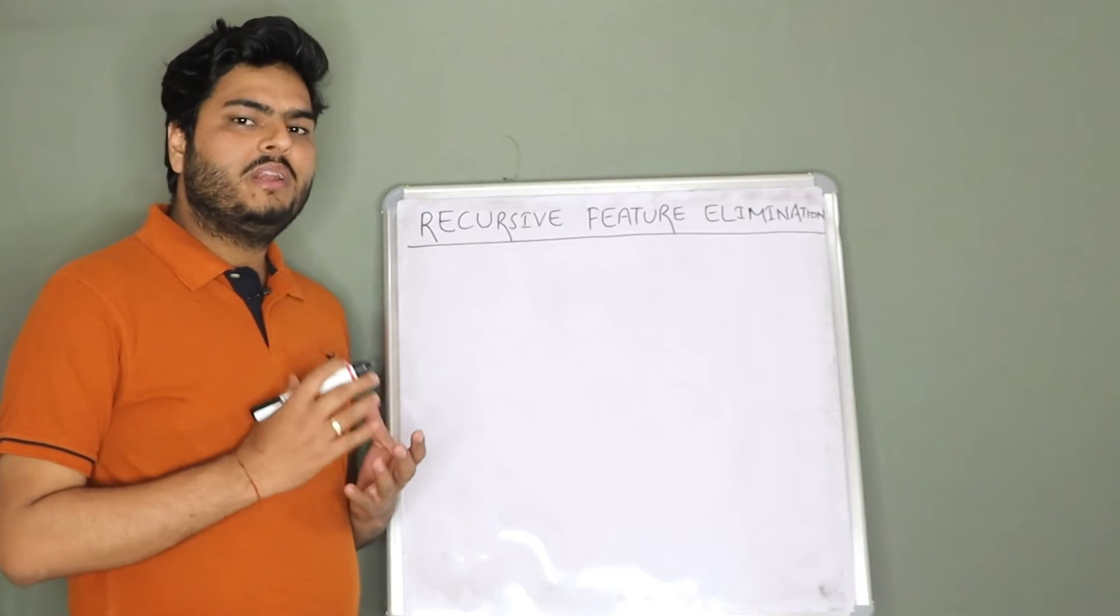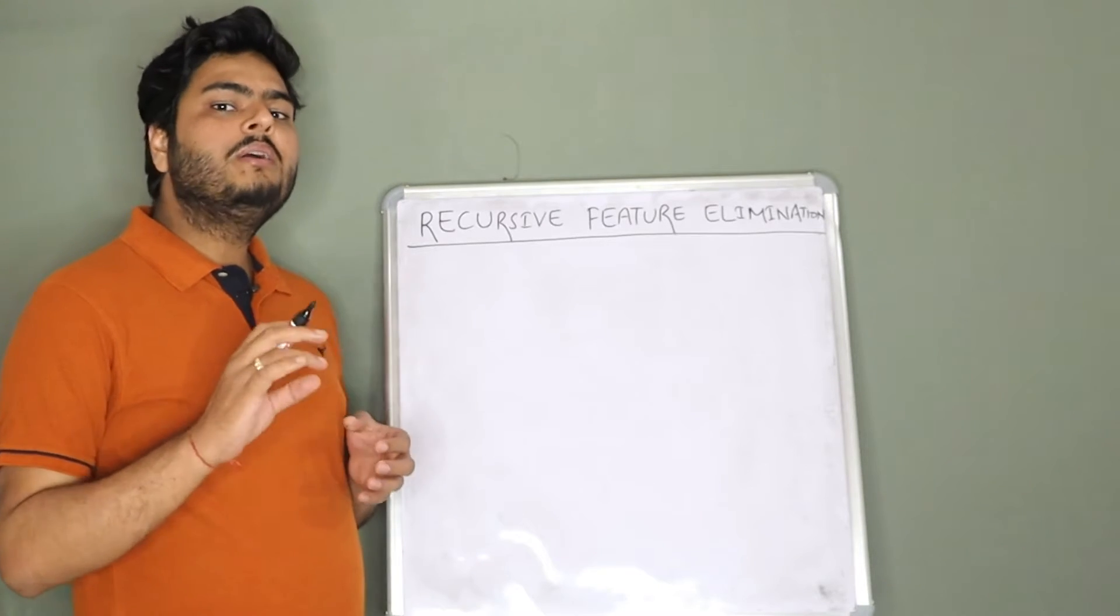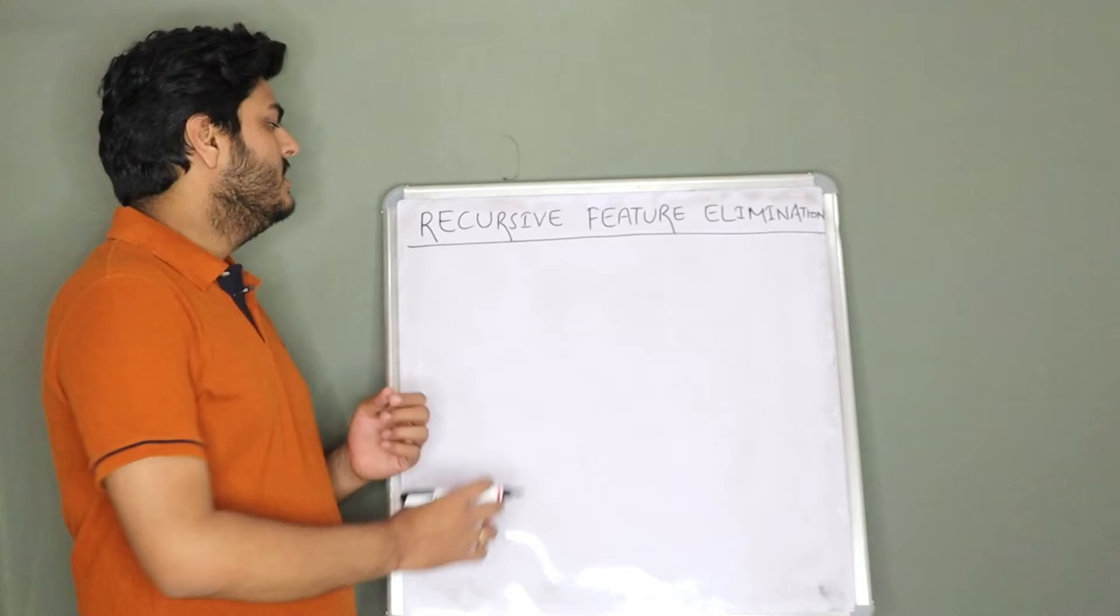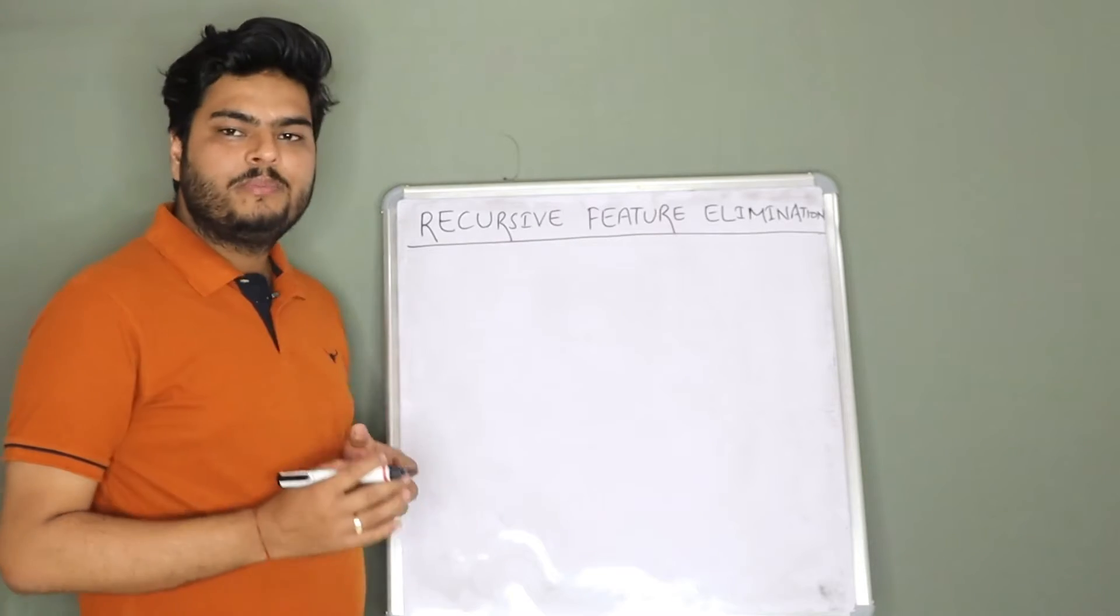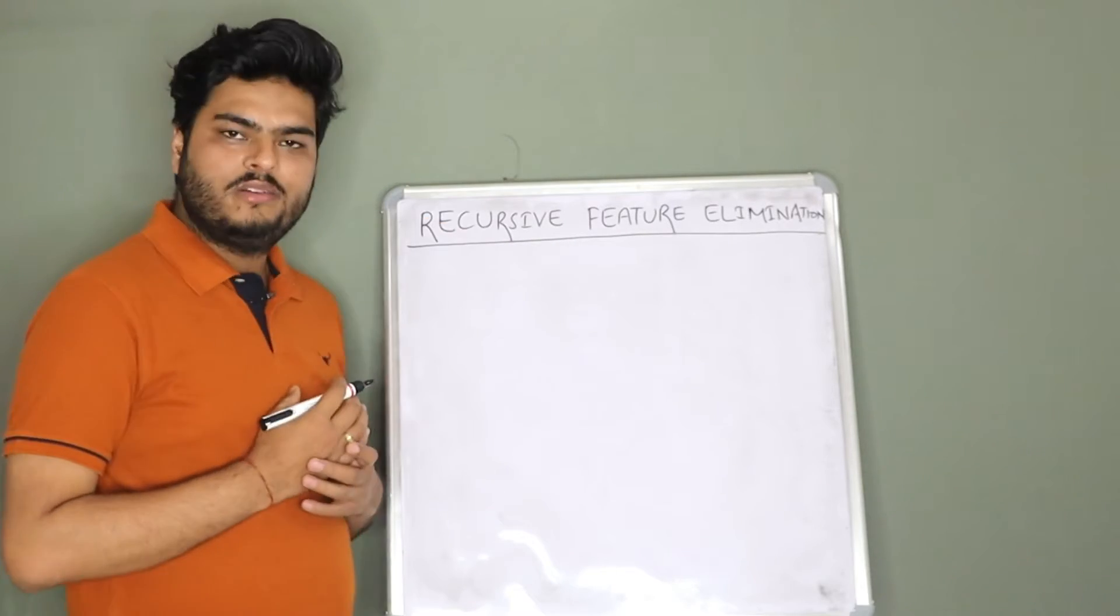One of my subscribers was asking me in the comments, Aman I don't find any good explanation for the Python implementation of recursive feature elimination. Can you create a video and show us how to implement RFE in Python?